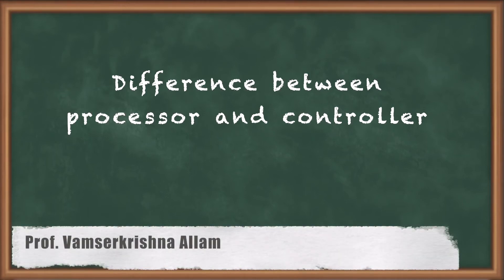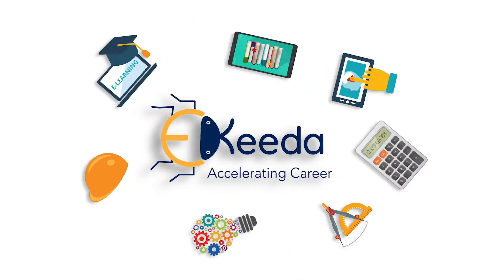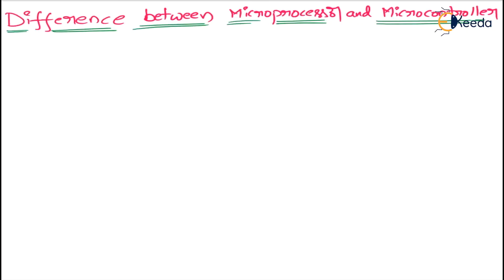Hi students, today we will discuss the difference between microprocessor and microcontroller. In the last class we discussed the introduction to microprocessor, the exact definition, and what is meant by fetching, decoding, executing, and compiling — all discussed with examples. If you didn't attend class one, please go through the previous videos to get a clear idea about microprocessor and microcontroller.